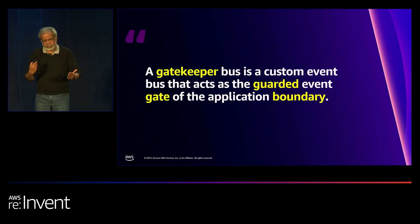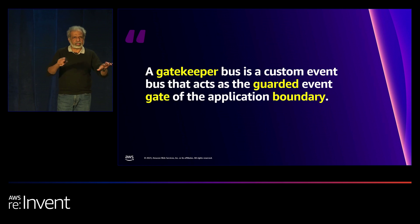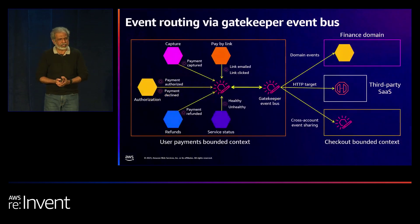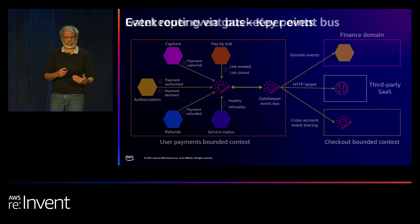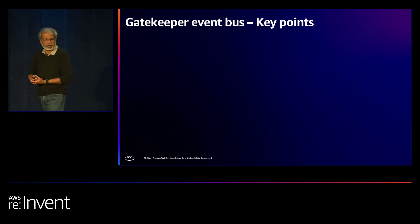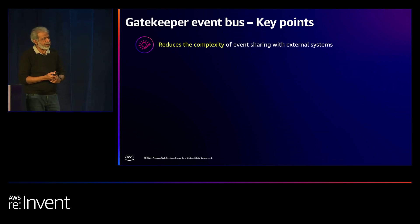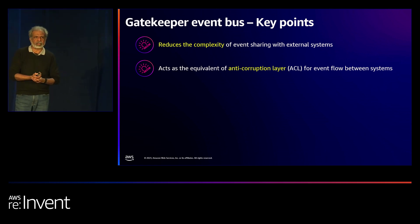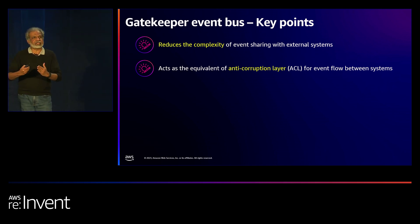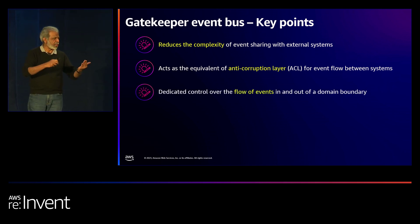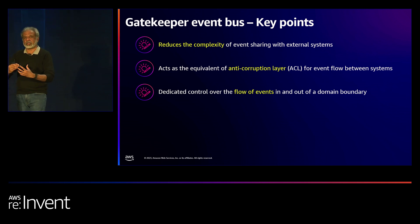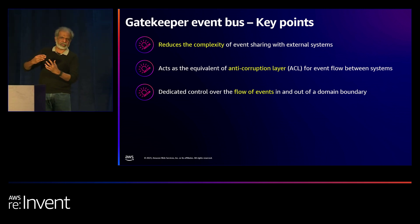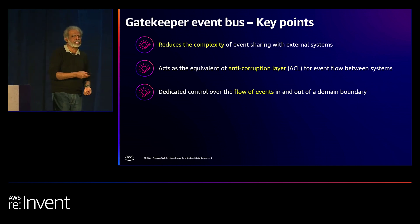I recommend separating external communications with a different event bus within your bounded context — what I call the gatekeeper bus or external bus. The internal event bus doesn't care about cross-accounts or external consumers — its focus is purely within the bounded context dealing with microservice events. The gatekeeper bus only deals with domain events that need to go out and the cross-account rules for sharing events with other domains. It can also act as an anti-corruption layer, with transformation logic — for example, if one consumer requires events transformed to CloudEvents format.